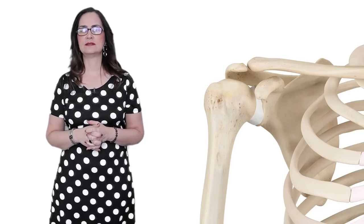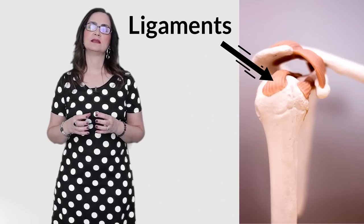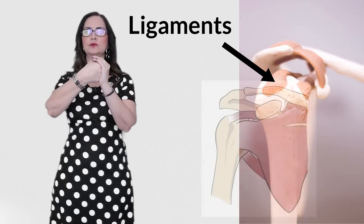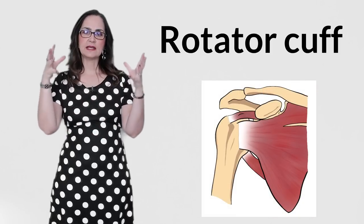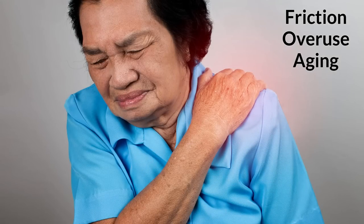But because it is very shallow, the shoulder is prone to instability or dislocations. In order to protect the shoulder from dislocating, which we call subluxations, the shoulder has a group of tendons and ligaments to keep the head of the humerus in place. This is called the rotator cuff. These tendons can be inflamed by friction, overuse, or aging.